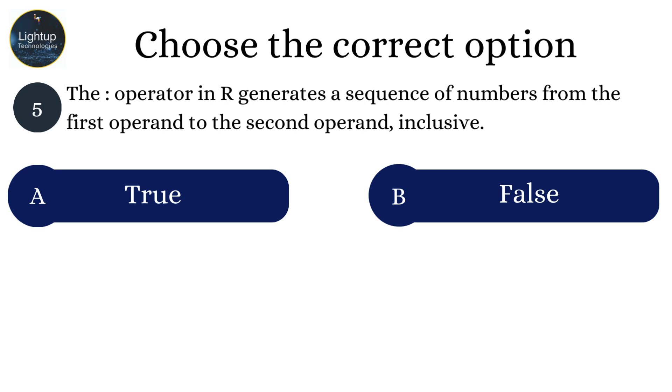The operator in R generates a sequence of numbers from the first operand to the second operand, inclusive.